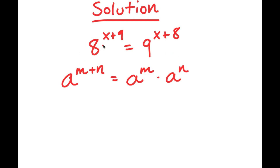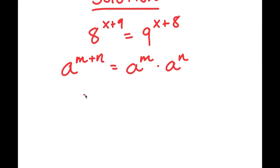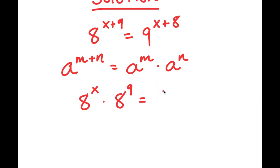So in this case, I have 8 to the power of x plus 9, and I can rewrite this as 8 to the power of x times 8 to the power of 9. And this is equal to 9 to the power of x plus 8, which I can also rewrite as 9 to the power of x times 9 to the power of 8.